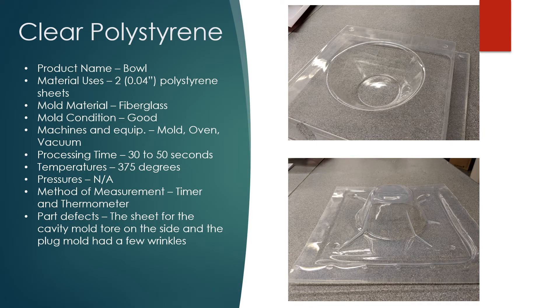To begin we have clear polystyrene. The product we were trying to thermoform here is a bowl. The material used for clear polystyrene is 2.04 polystyrene sheets. It's two because of the two different kinds of molds.